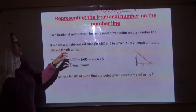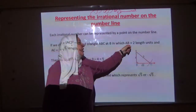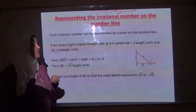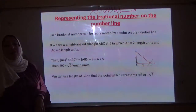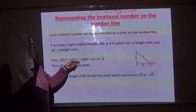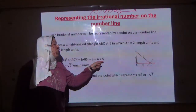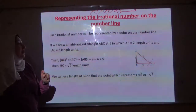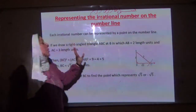If we draw a right-angled triangle ABC at B, in which AB equals 2 length units and AC equals 3 length units, we can use Pythagoras theorem. BC squared equals AC squared minus AB squared, which equals 9 minus 4, which equals 5. Then BC equals square root 5 length units.